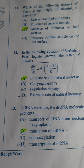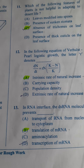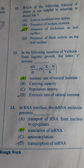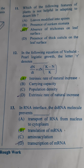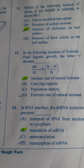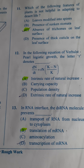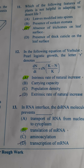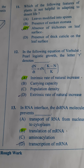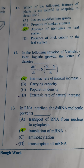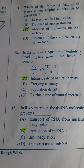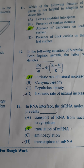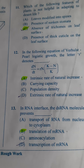Next one: In RNA interference, the double-stranded RNA molecule prevents — this double-stranded RNA molecule binds to the mRNA. So it will not allow the messenger RNA to express its character, that is, it will block translation. So if you look at the options, B is the correct option — it blocks the translation of messenger RNA.